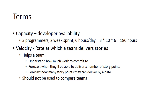Velocity helps a team understand how much work to bring into a sprint, to forecast when they can deliver a set number of story points, and they can also forecast how many story points they can deliver by a specific date. Velocity is based on story points, and typically the meaning of story points varies from team to team, so usually velocity should not be used to compare the performance of teams.